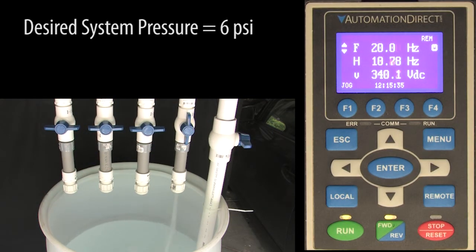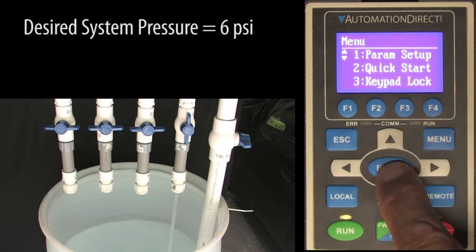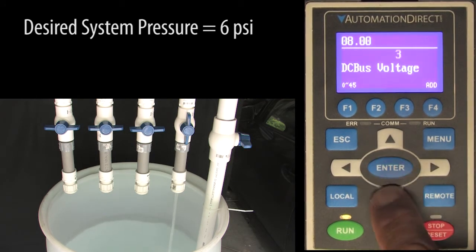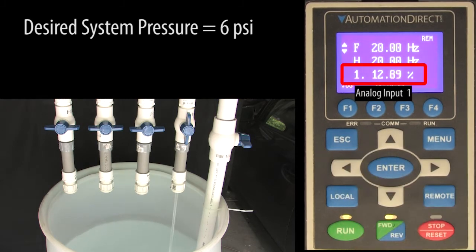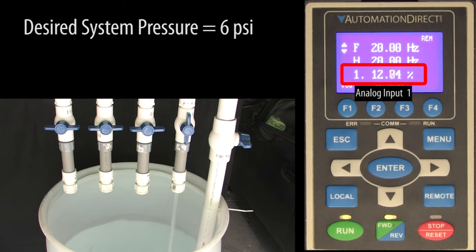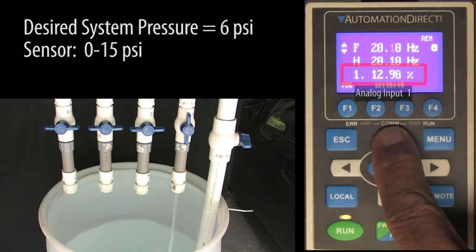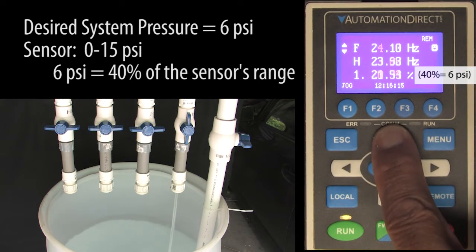We can monitor the feedback signal on analog input 1 right on the main display using parameter 8.0 and setting it to an 11. That shows us the sensor signal as a percentage. The sensor's range is 0 to 15 psi. The 6 psi we want is 40% of that range.